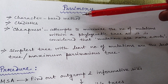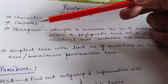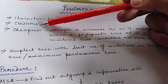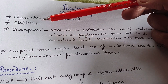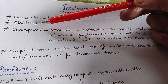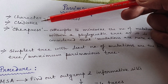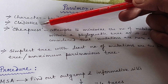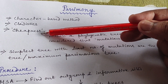This is a character-based method, and it comes under cladistics, which means we mainly focus on shared derived characters. If you don't know what cladistics is or what shared derived characters are, I have a video on that — the link is in the description box below or in the i-button above. It is a cladistics-based method where we give emphasis on shared derived characters. The third C is cheapness.